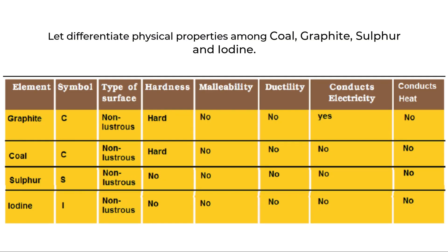The observation table here covers graphite, coal, sulphur and iodine. Now let's differentiate physical properties among these. The symbol for graphite and coal is C, whereas sulphur is S and iodine is I. You may wonder why graphite and coal have the same symbol — it is because sulphur and iodine are elements, whereas graphite and coal are not elements but are products of the element carbon.